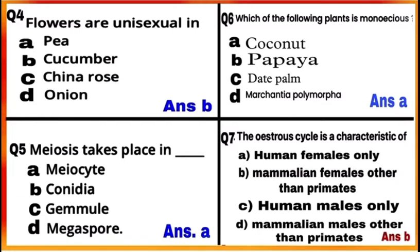Question 6: Which of the following plants is monoecious? Out of the four given plants, papaya, date palm, and Marchantia are dioecious plants — in these, both sex organs are present in different plants. In option A, coconut is a monoecious plant where both male and female flowers are present on the same plant. So the answer is A.